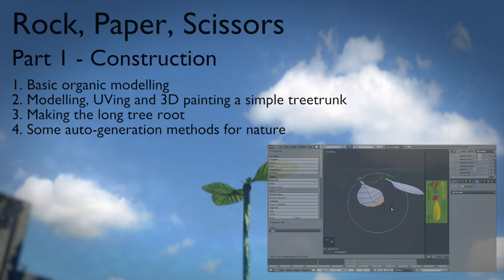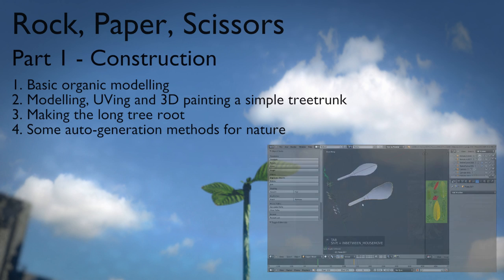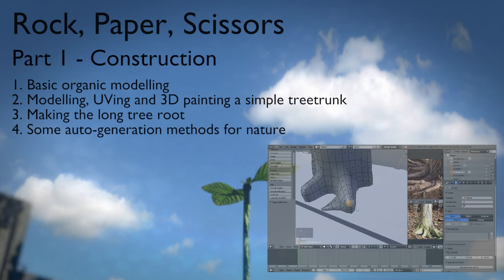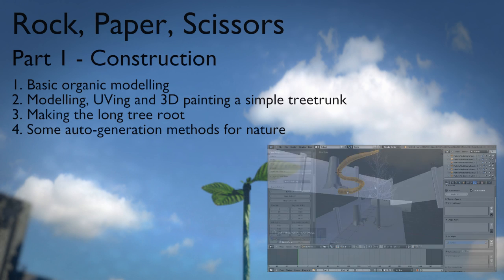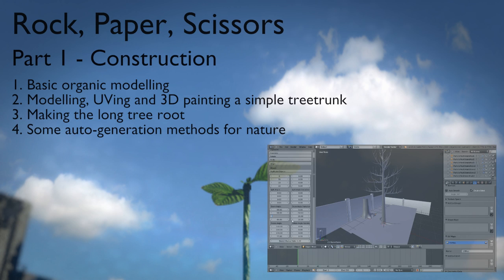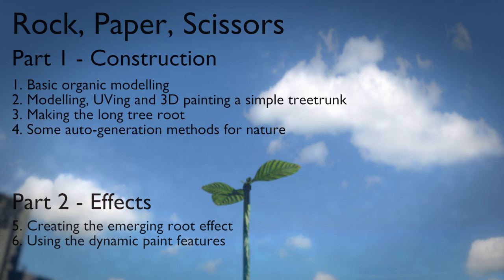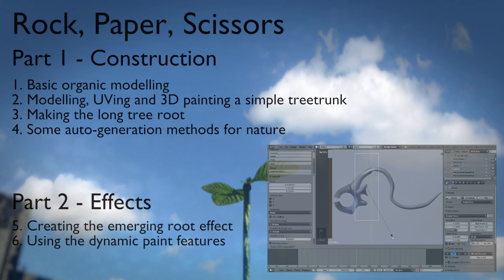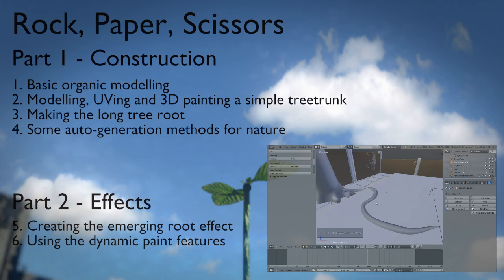The first part is going to be construction related — I'll show some useful organic modeling workflows. The next section covers the workflow for making the basic tree trunk and the long tree root that snakes through the ground. We'll also look at auto generation options with the Sapling and Ivy Generator add-ons, then the main driving effect: how the tree root moves through the ground using a root reveal effect and dynamic paint.